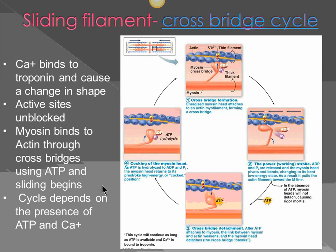You remember earlier we talked about terminal cisternae, which were the dilated parts at the end of the sarcoplasmic reticulum. Their function was to store calcium and release it when needed. Now we are going to see how that calcium plays a role in the contraction of muscle.